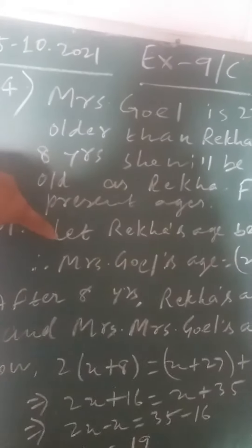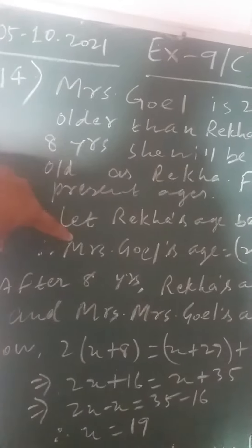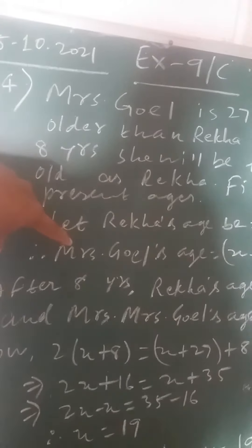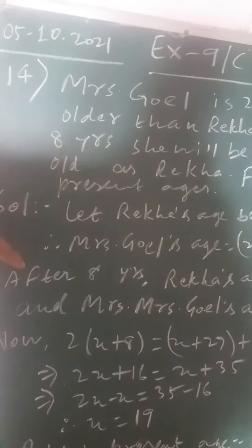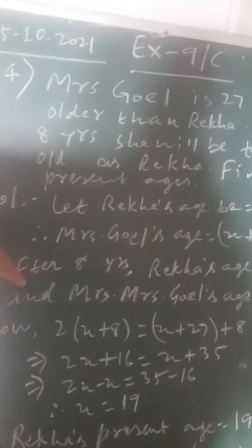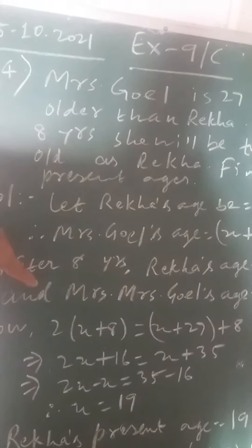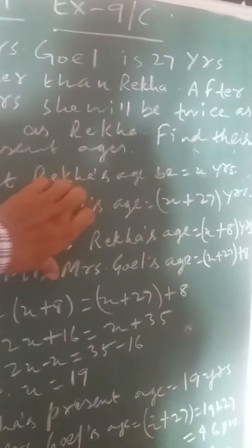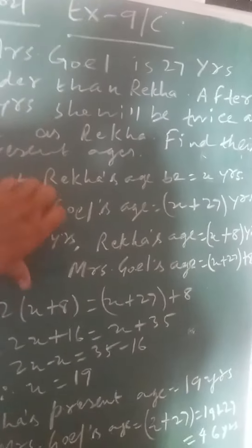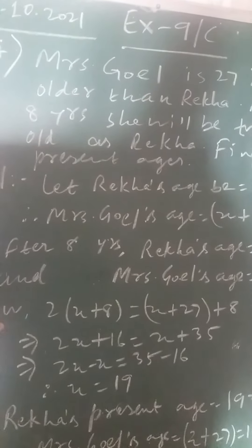Solution. Let Rekha's age be X years. So Mrs. Goyal's age will be X plus 27 years. After 8 years, Rekha's age will be X plus 8 years, and Mrs. Goyal's age will be X plus 27 plus 8 years.